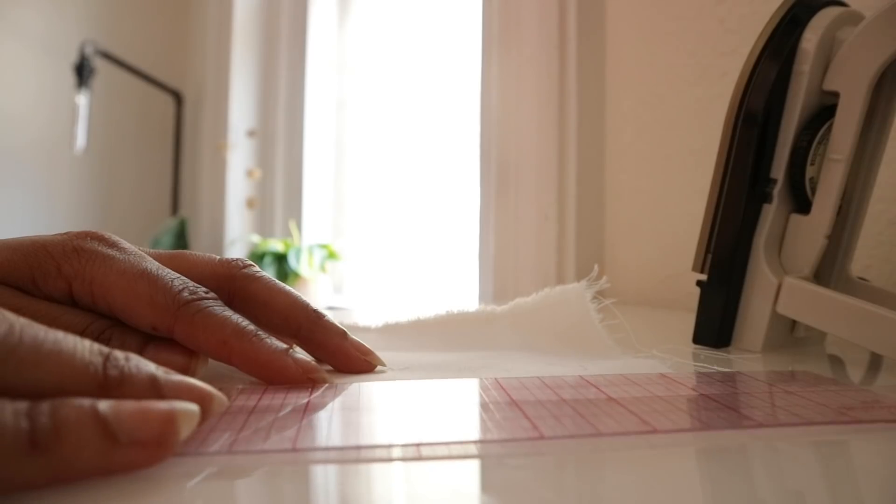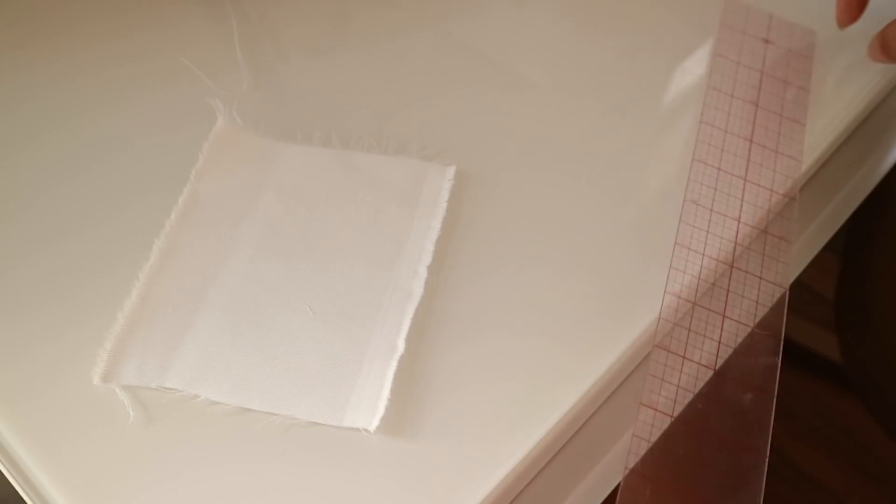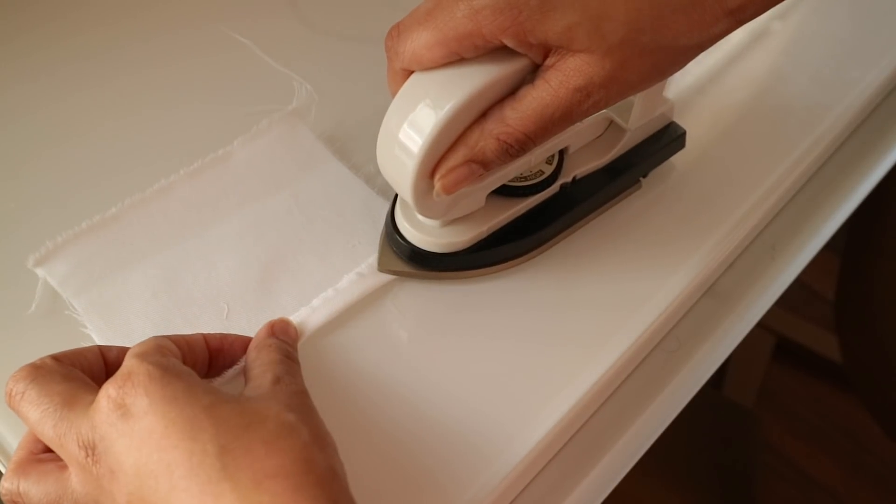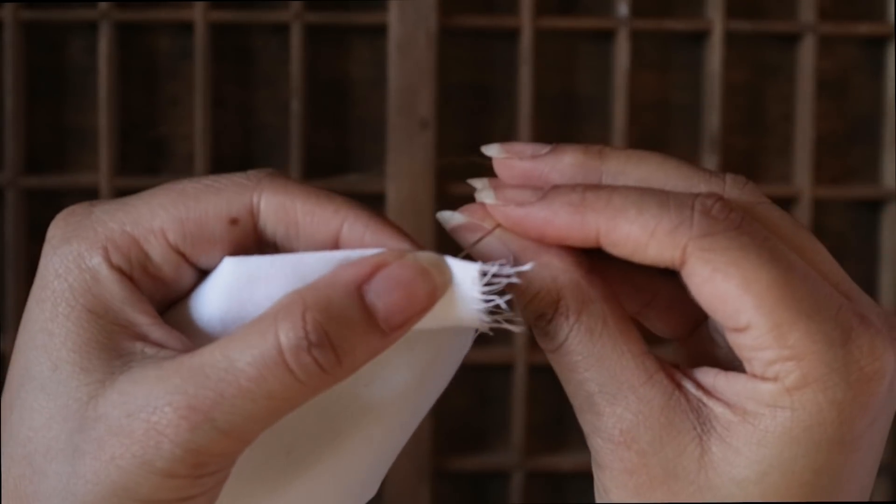I'm using my ruler to make sure that that hem is even. So as you can see, this is where that clear ruler really comes in handy. So now we're ready to sew, right? But first, here's how you actually thread your needle.